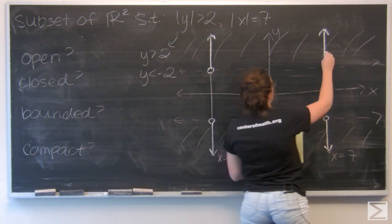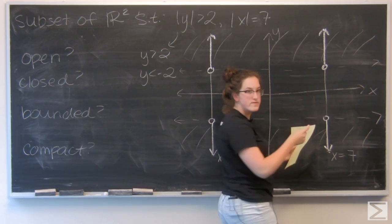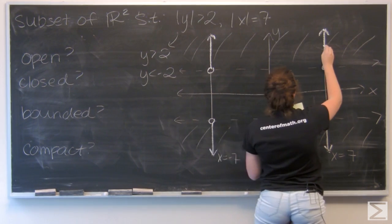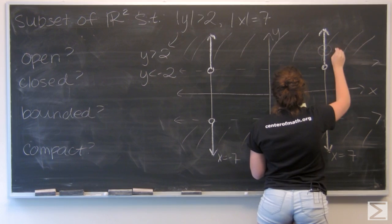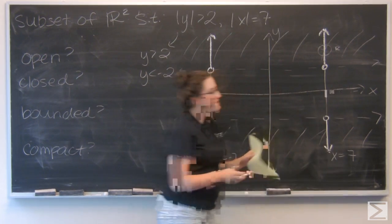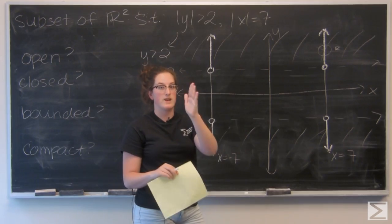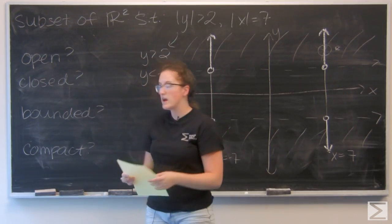Well, I can't really do that because these are just lines. So if I pick the point, say, (7, 5), a ball of radius r around it will never be fully in the set because the set is really just a line of points. So no, it's not open.